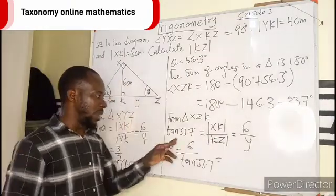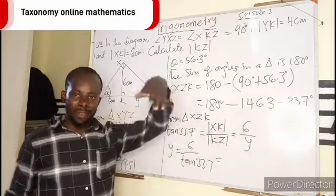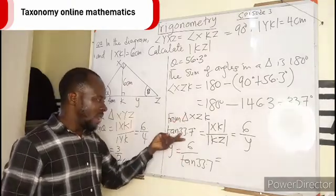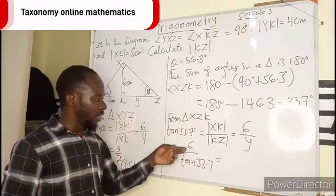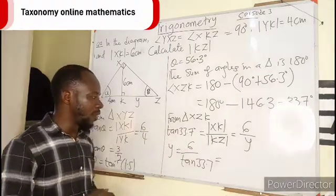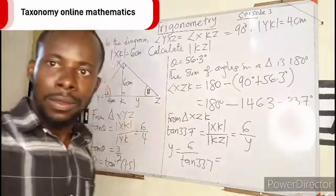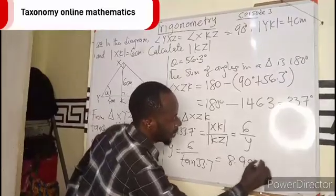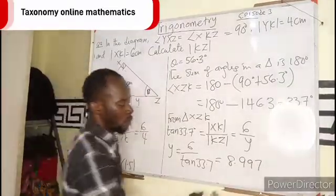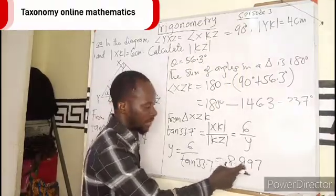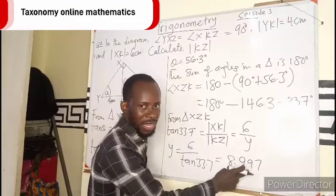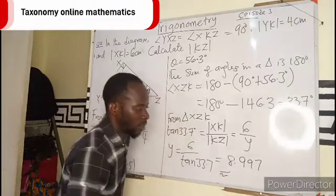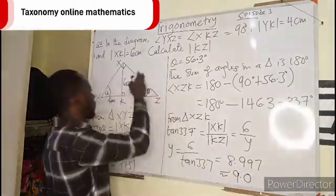So if you cross multiply, 6 equals to Y tan 33.7, you are dividing by this tan 33.7. Let's check that on the calculator and that will give us 8.997. If you approximate to 2 decimal places, this will be approximated to 9.00 centimeters.